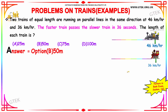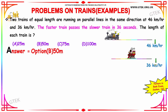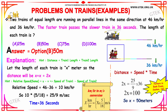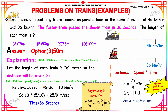The trains are running at 46 and 36 kilometers per hour. The length of each train is x, so the total distance is 2x. Since they move in the same direction, relative speed is 46 minus 36, which equals 10 kilometers per hour. Converting: 10 multiplied by 5 divided by 18 gives 25 divided by 9 meters per second.